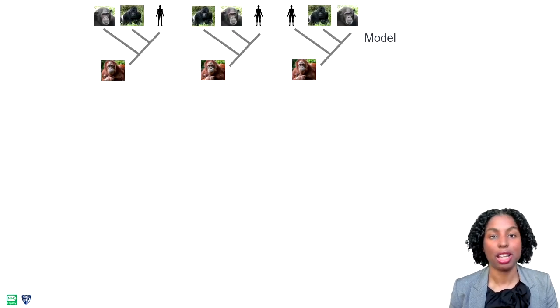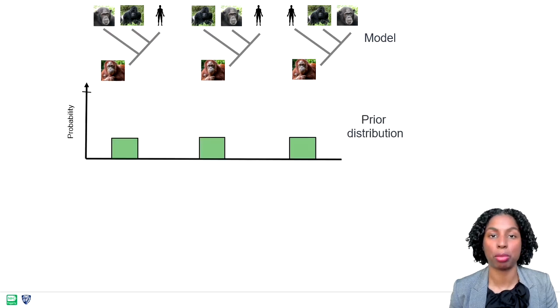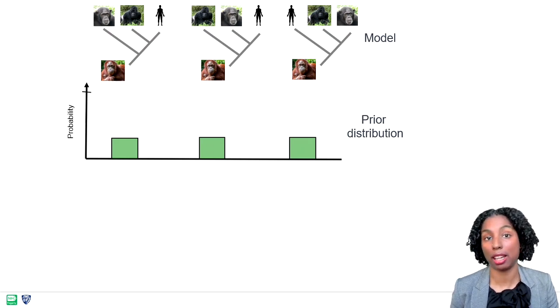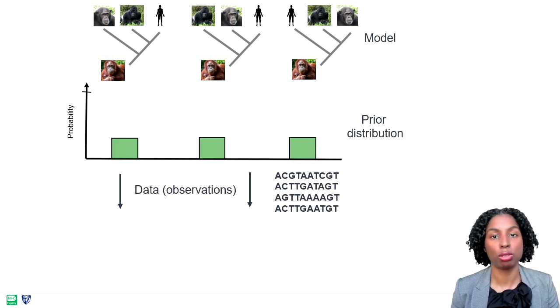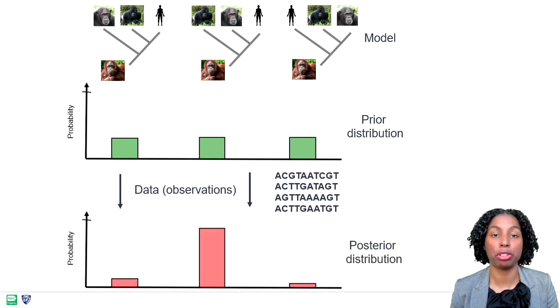In Bayesian phylogenetic inference, we can assign a prior probability to each hypothesis. In this case, an equal probability suggests no prior preference for any three-topology. This is usually referred to as an uninformative prior. Then, we will use statistical tools and models in conjunction with genetic data to update this prior, resulting in a posterior probability for each of these topologies.